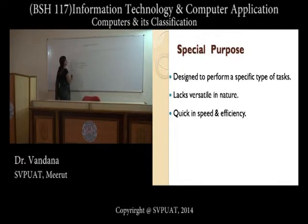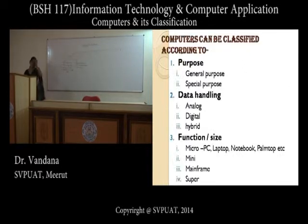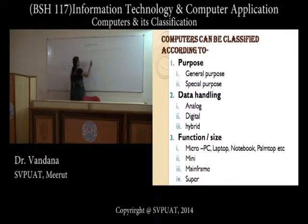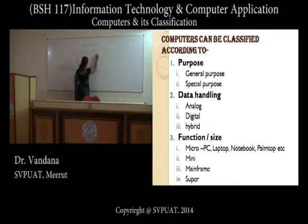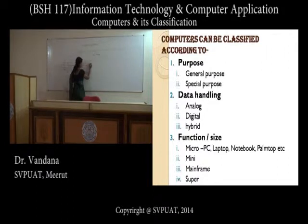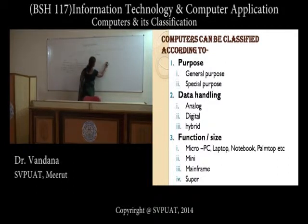Computers may also be divided into categories according to data handling — that is, what type of data they process. According to data handling, they can be classified into three major groups: analog, digital, and hybrid.